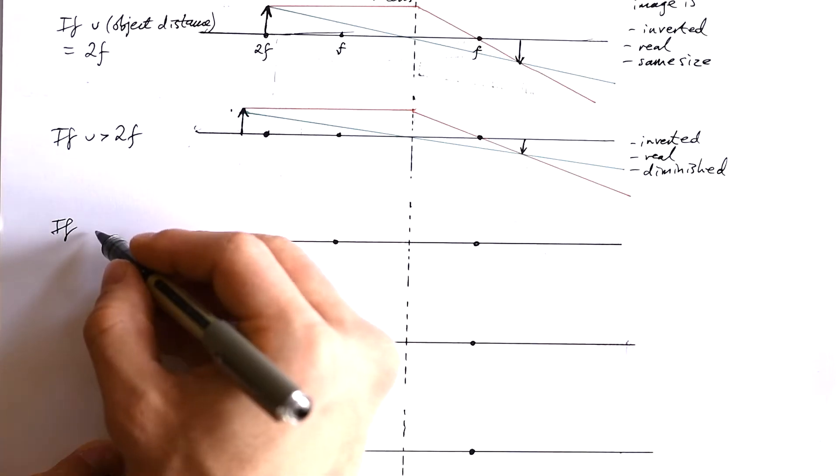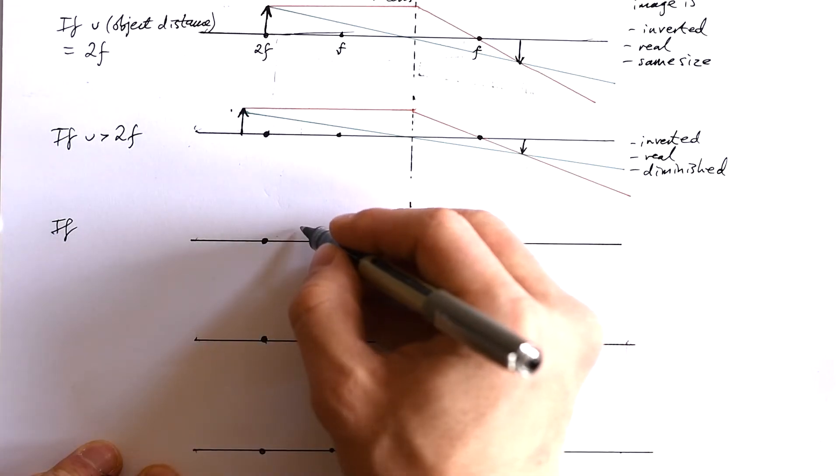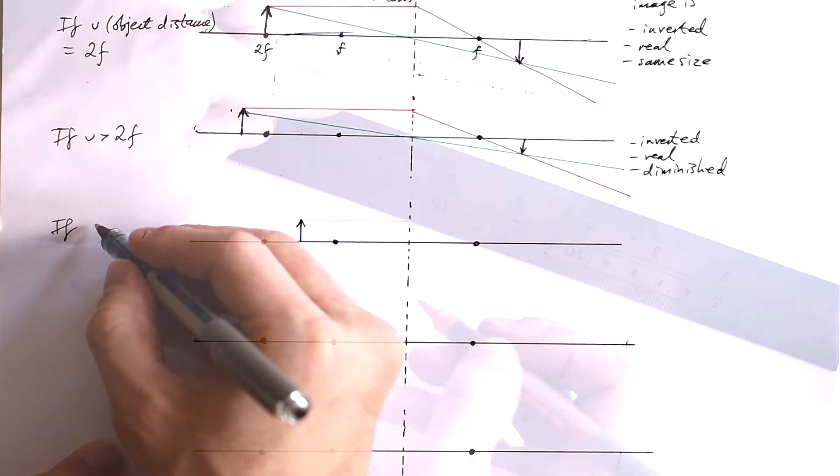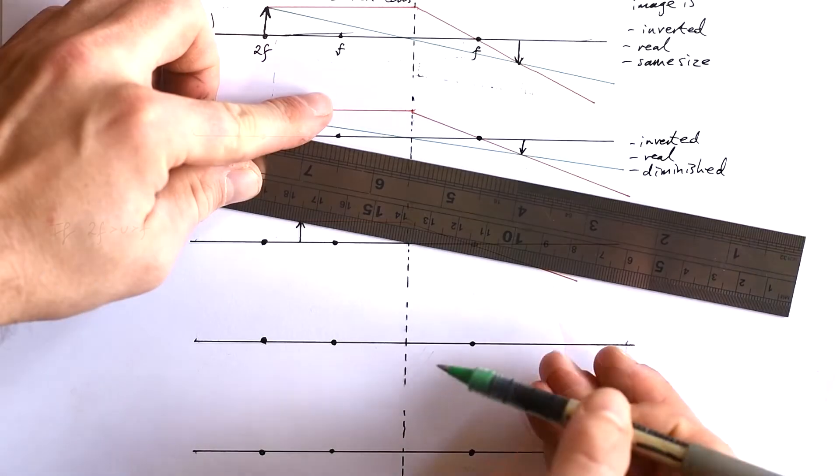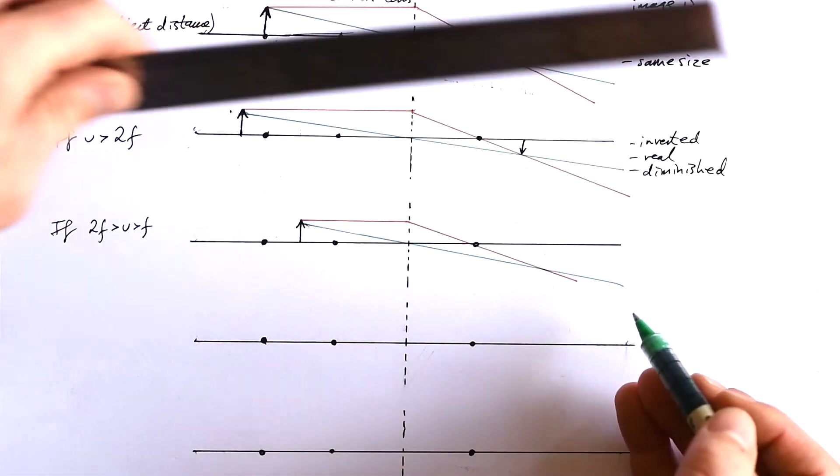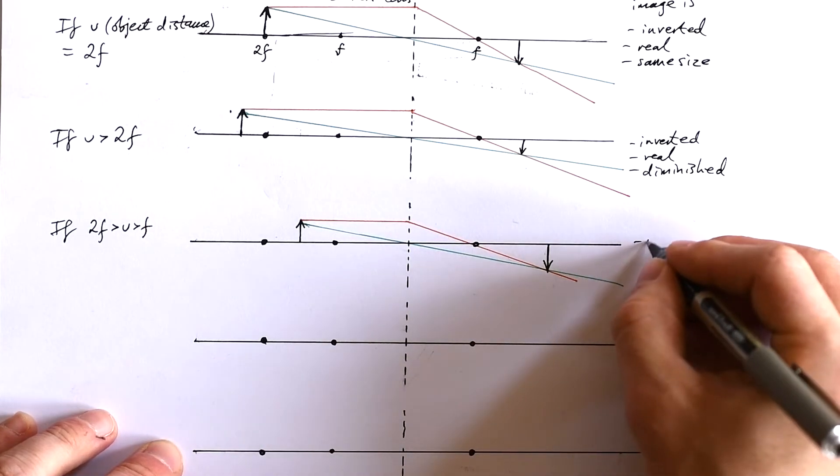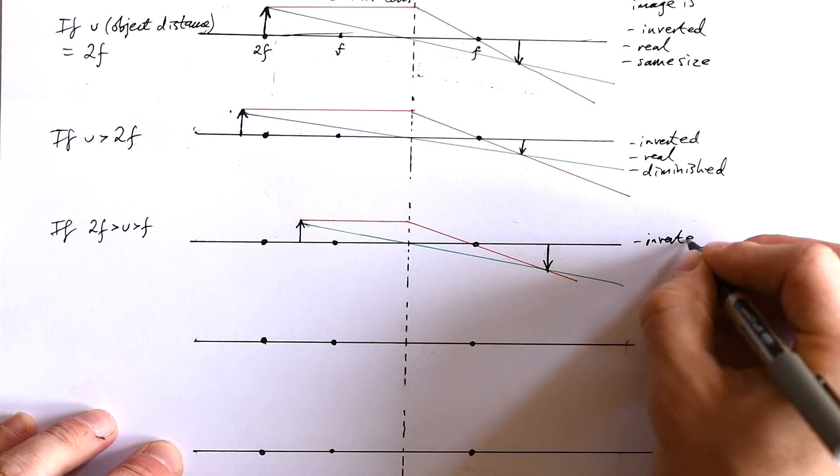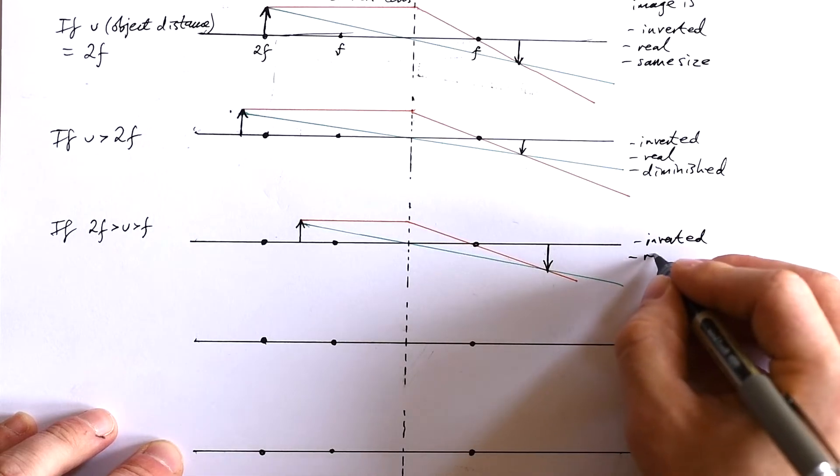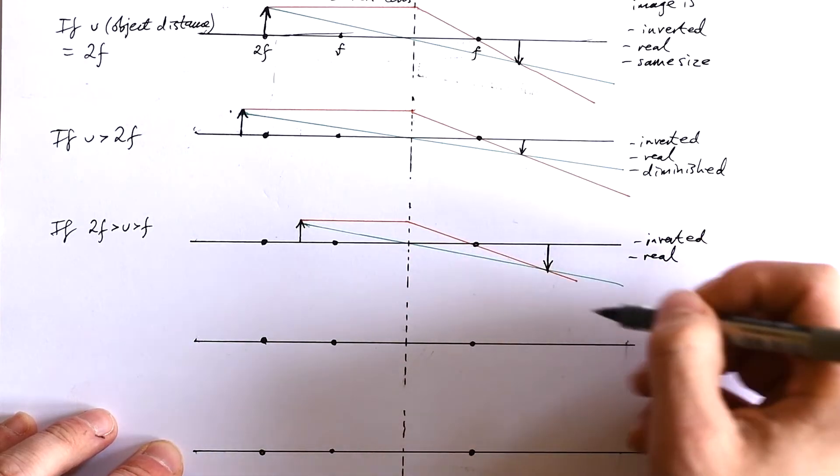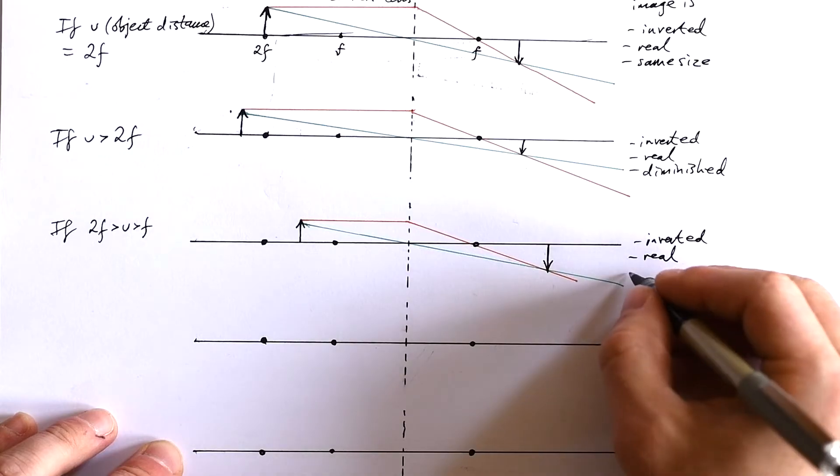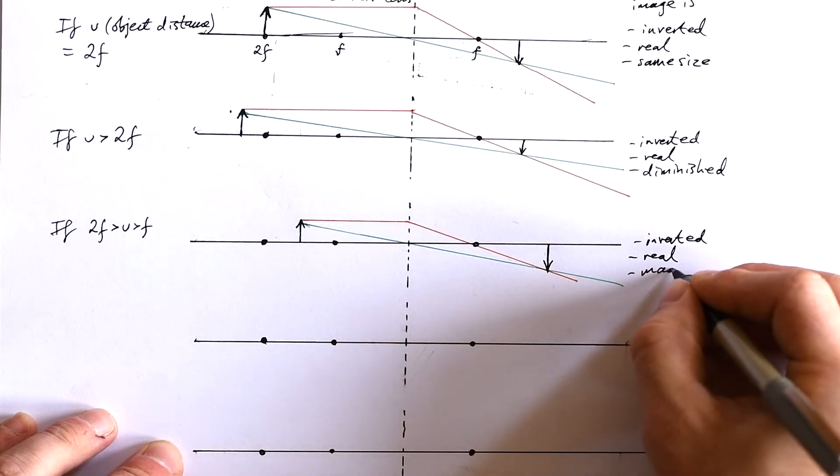But what if U sits between F and 2F? Again, it's similar, but what can we see? The image is actually bigger than the object now. Once again, it's inverted. It's real because it can be projected. I can put a screen there and see the image that is formed, but it is magnified.